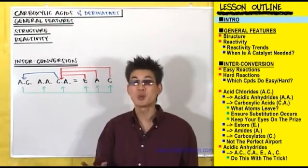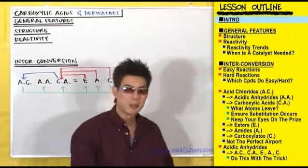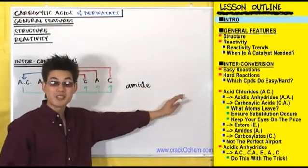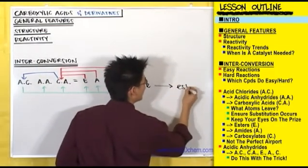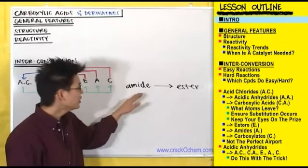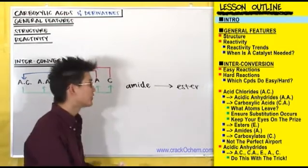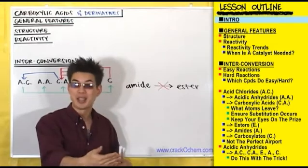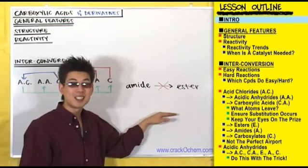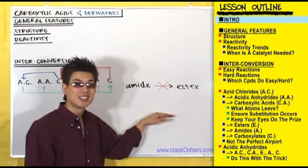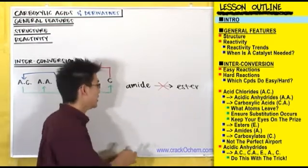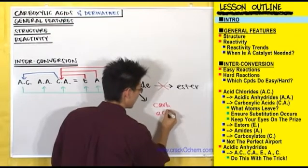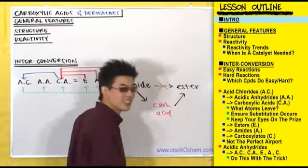This is really useful if you ever want to interconvert between two types of compounds. For example, say you have an amide and you want to turn it into an ester. The problem is there is no way to turn an amide directly into an ester — there is no successful reaction for doing this. What we can do is use a carboxylic acid as a middleman: take your amide, turn it into a carboxylic acid, and then use that carboxylic acid to make the ester that you want.